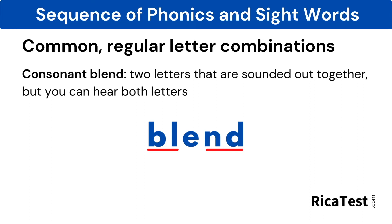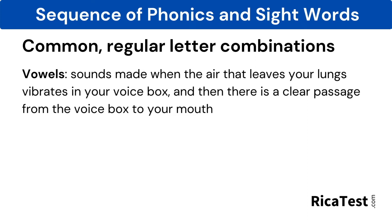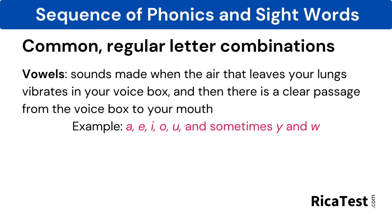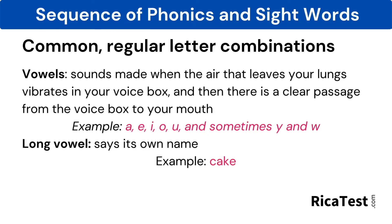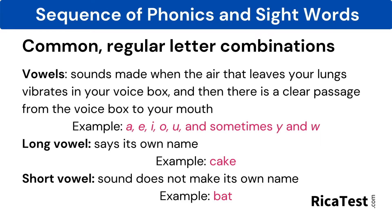In English, vowels are sounds made when the air that leaves your lungs makes a vibration in your voice box, and then there is a clear passage from the voice box to your mouth. Vowels include A, E, I, O, U, and sometimes Y and also W, such as in sky for Y or cow for W. A long vowel is when the vowel says its own name. A short vowel happens when the sound does not make its own name, such as in bat.